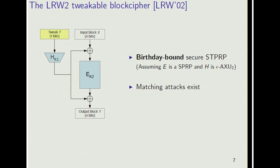We can solve both problems simultaneously by putting the tweak through a hash function. This gives us the construction that Liskov, Rivest, and Wagner proposed. We call it LRW2 because it's the second one they proposed. This gives us birthday bound security in terms of being a strong TPRP, under the assumption that the block cipher E is secure and that H is an epsilon-almost-XOR universal hash function. The birthday bound is tight in the sense that you can find distinguishing attacks that succeed with high probability using about square root of 2^n queries.